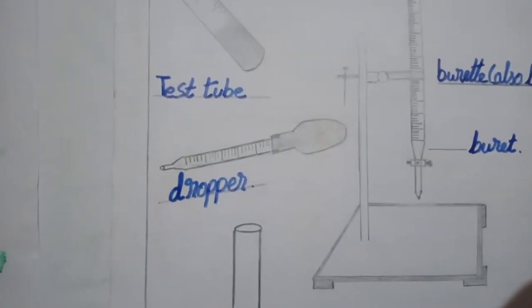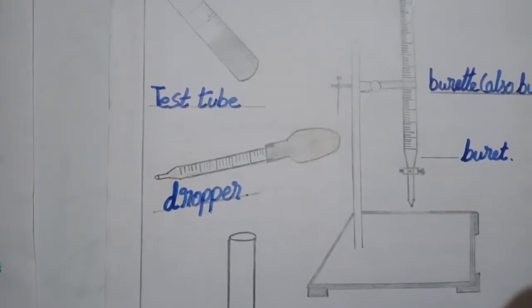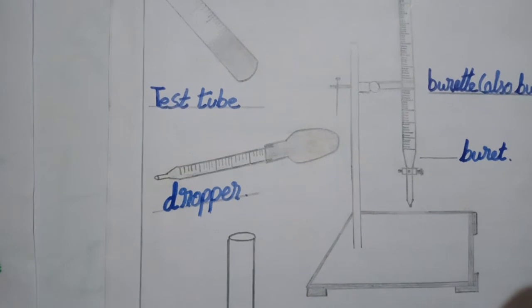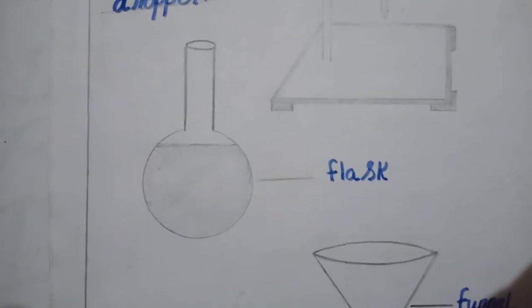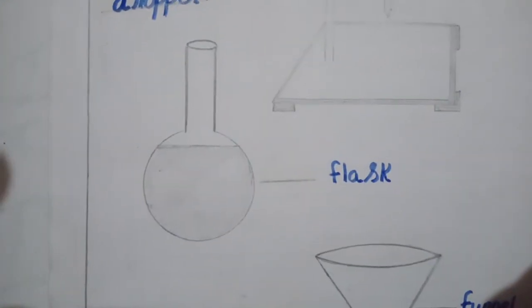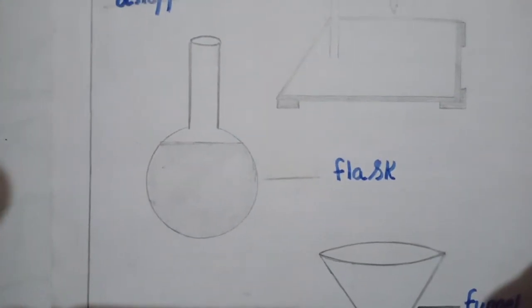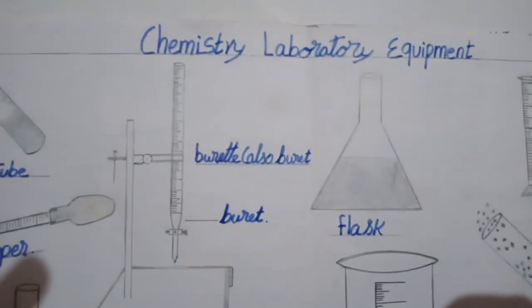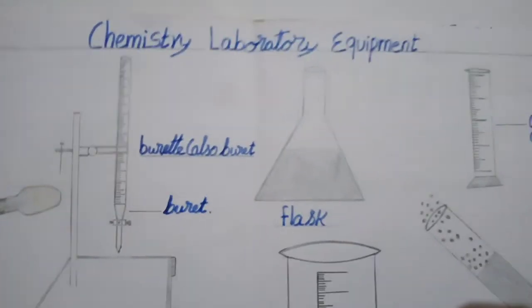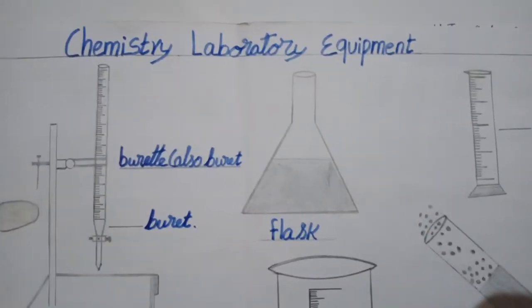Next one is a dropper. This dropper is used to put some chemical into the test tube. Next, this is a flask — this type of flask is a round bottom flask. Next one is a burner.